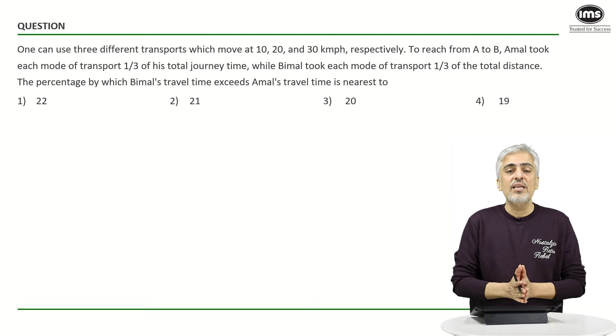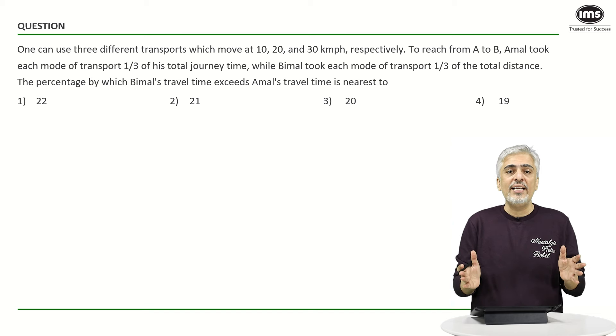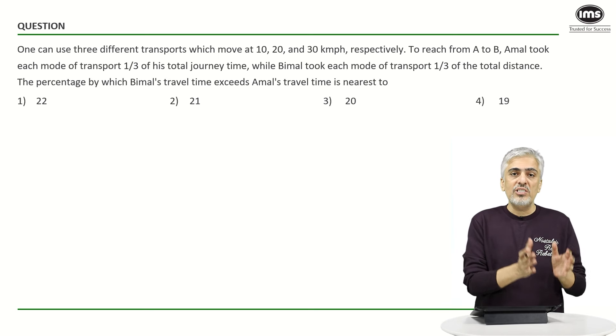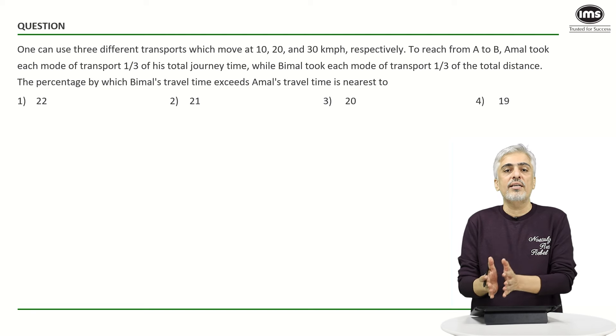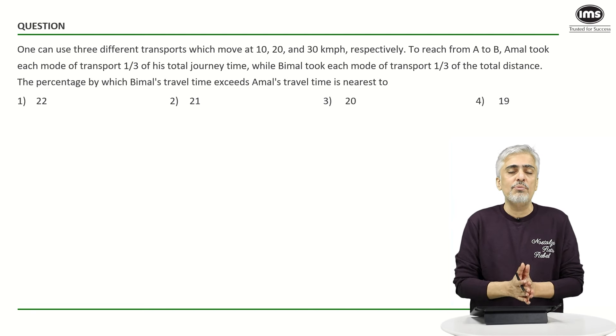So what did Amal do for his journey? He broke up his journey into equal time slots. That means suppose if he had taken three hours to travel from place A to place B, for first one hour he moved at a speed of 10, for the second one hour he moved at a speed of 20 and then for the third one hour he moved at a speed of 30.